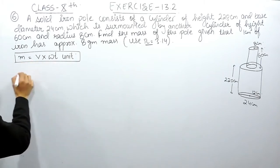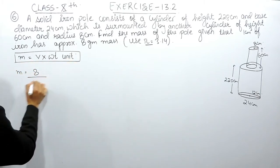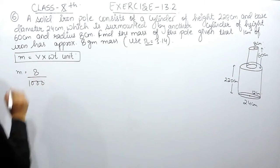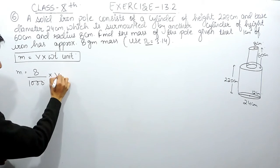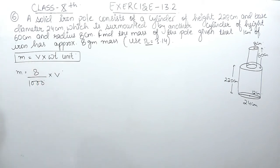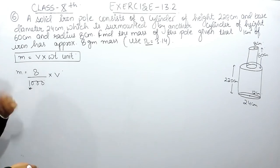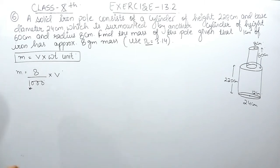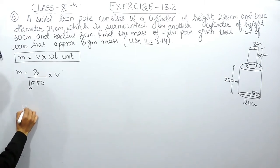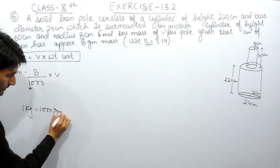The mass will be equal to the unit weight, which is 8 grams, and this can be written as 8 upon 1000 kg, multiplied by its volume. So 1 kg is equal to 1000 grams.